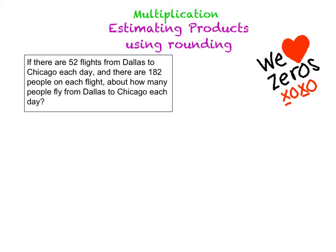Alright, I'm going to visualize this for a minute. I'm at the airport. I'm seeing that there are 52 flights going to get people from Dallas to Chicago each day. And on each flight there's a lot of people — there's 182 people on each flight. And I need to find out about how many people are getting from Dallas to Chicago.